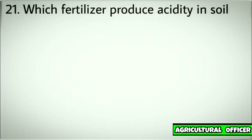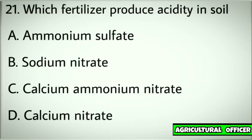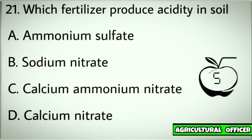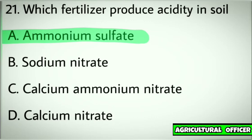Question number twenty-one. Which fertilizer produces acidity in soil? Options: A. Ammonium sulfate. B. Sodium nitrate. C. Calcium ammonium nitrate. D. Calcium nitrate. Correct answer: A. Ammonium sulfate.